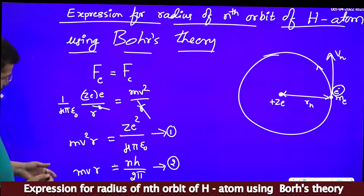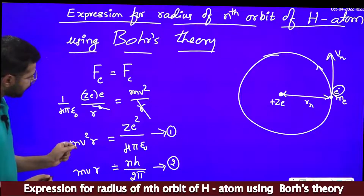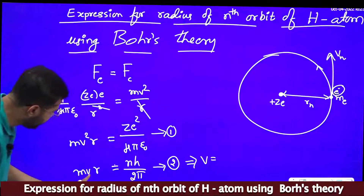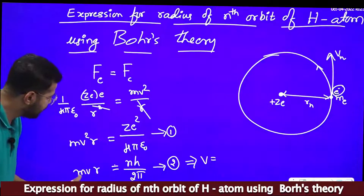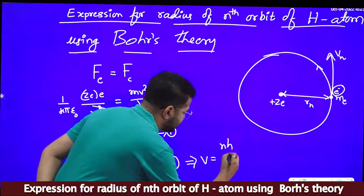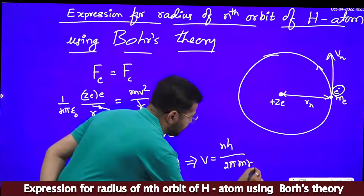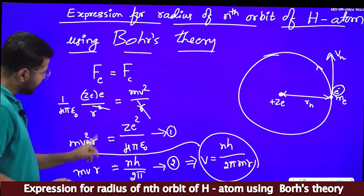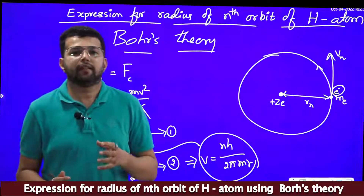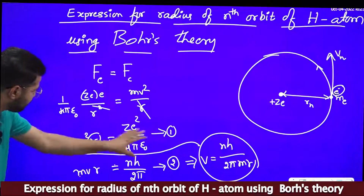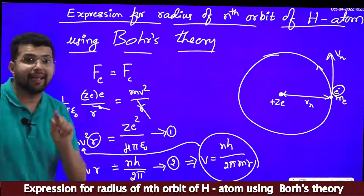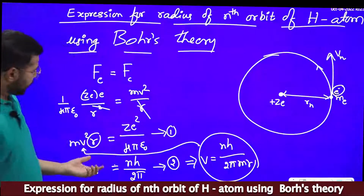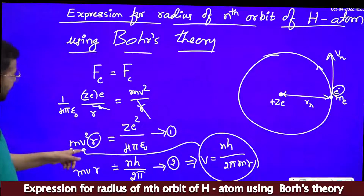We need an equation for R. If we use Equation 1 directly, n does not appear in it, but we know there are different orbits n = 1, 2, 3, so n must appear in the equation for R. Therefore, from Equation 2 we write an expression for v: v = nh/(2πmr). We will substitute this value of v into Equation 1.